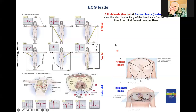Let's take a look at the frontal leads again. According to Eindhoven: Lead 1 goes from right arm to left arm, Lead 2 from right arm to left foot, Lead 3 from left arm to left foot. According to Goldberger, we have AVR, AVL, and AVF.